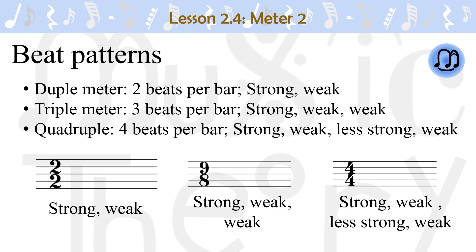The pattern of beats in a duple meter, which has 2 beats per measure, is a strong beat followed by a weak beat. In a triple meter, which has 3 beats per bar, there is 1 strong beat followed by 2 weak beats.